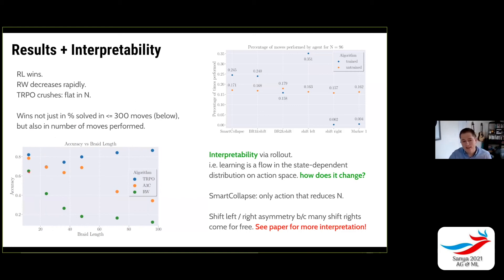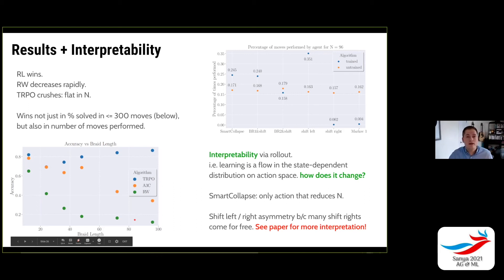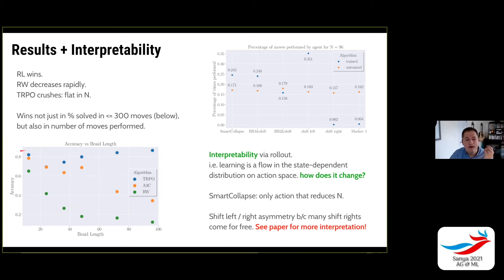For low n, a random walker is already doing pretty well, successfully unknotting about 65% of the examples, while RL is doing something like 80%. But as we increase n, as you'd expect, the random walker does very, very poorly — there's a large fall-off and it does worse and worse. A3C, one RL algorithm, does better. But what's remarkable is that trust region policy optimization is relatively flat as a function of n — for braids of length 10, it's getting 80% correct, and even up at braids of length 100 it's still getting about 80% correct. This is a good example of the gains you can get using machine learning to solve discrete optimization tasks.